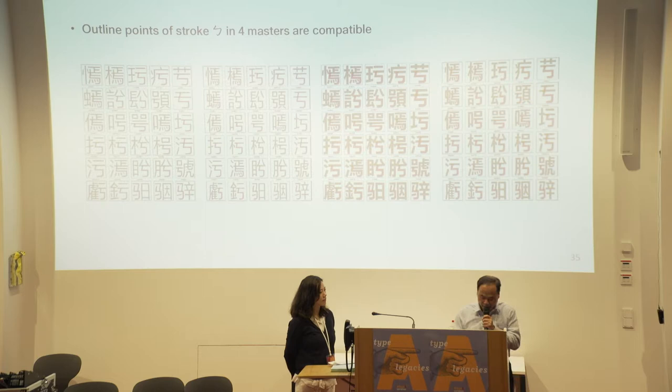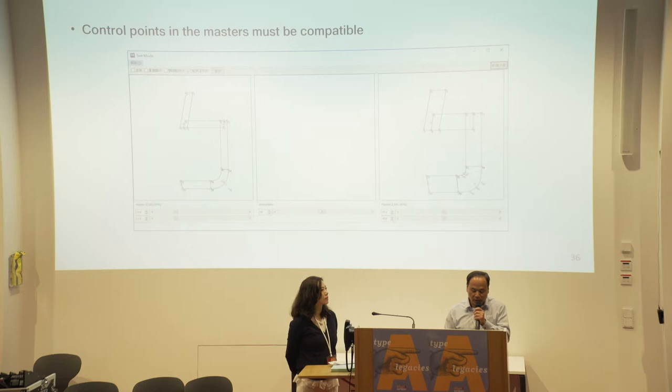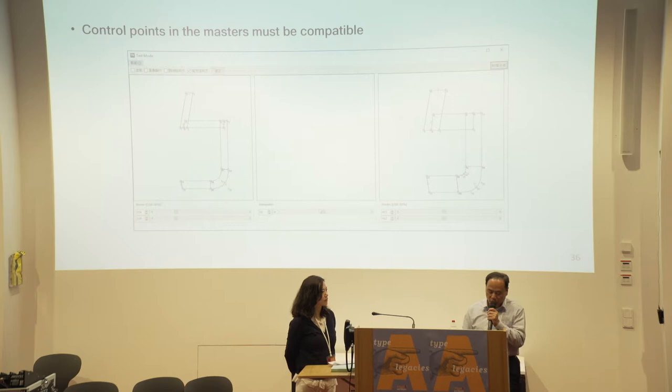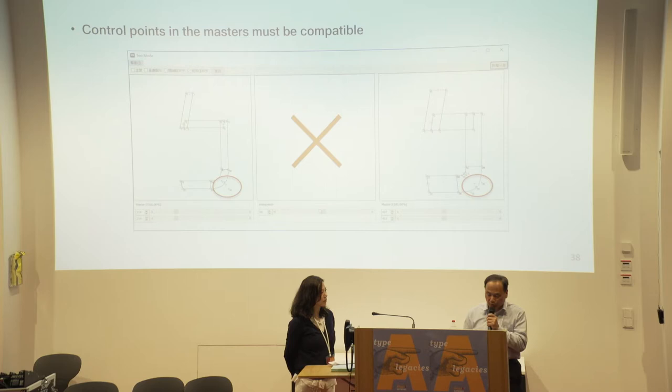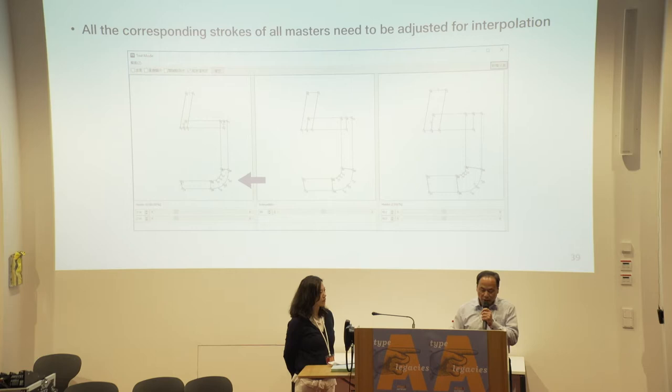Checking compatibility is an important process that we need to do first in the stroke design phase. This function is what ARFIC's font maker offers. The picture shows that in the corresponding strokes of the two masters, the interpolation failed because the curvature marked by the red circle on the right side needs to be shown with two quadratic curves, while the left stroke only needs one. We need to split the quadratic curve into two. After fixing it, we can get the interpolation done.